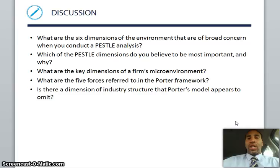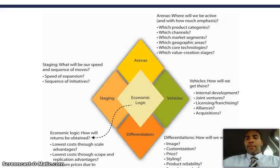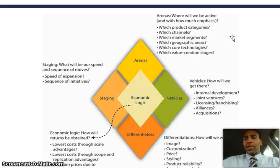Now you have the strategy diamond. In the strategy diamond, let's look at our different areas. We have our arenas: Where will we be active and with how much emphasis? What product categories, which channels, what market segments, what geographic areas, which core technologies, which value creation stages?